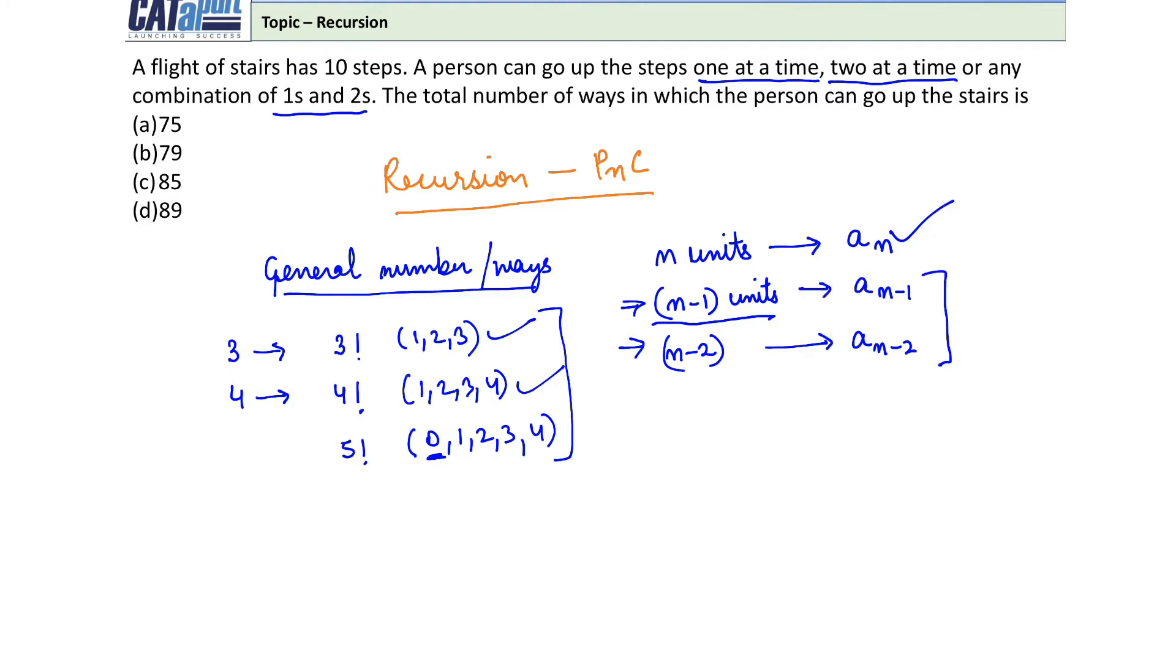Let's see how easy it is if we apply recursion. First, we assume that if there are n steps, the ways to cover or travel them is a_n, where we can travel only one step at a time or two steps at a time. Now, if we take the first step, what can it be? It can be one step. If we take a one-step first, then how many steps remain? n minus one steps.